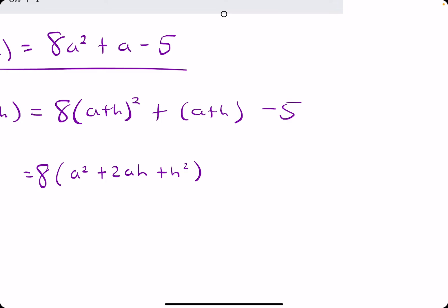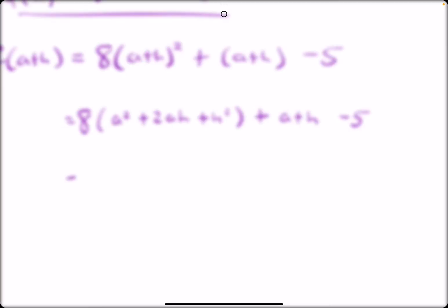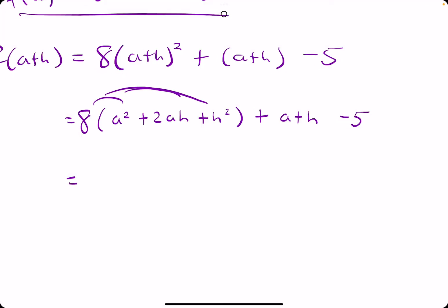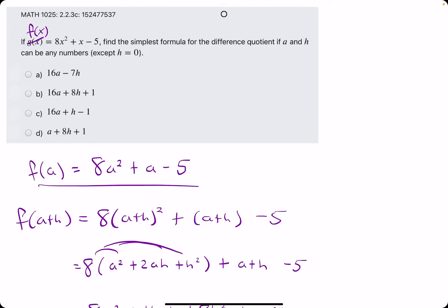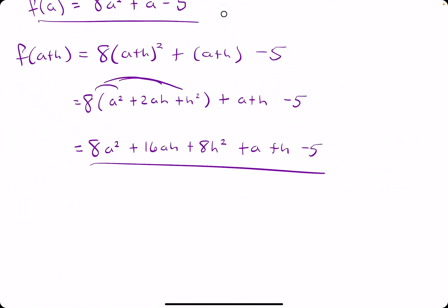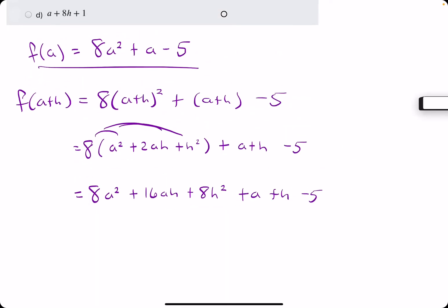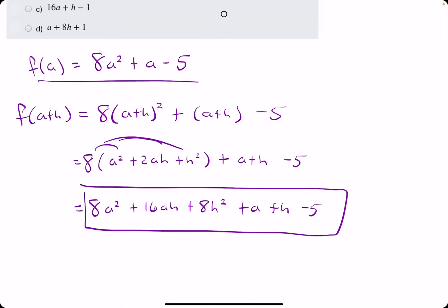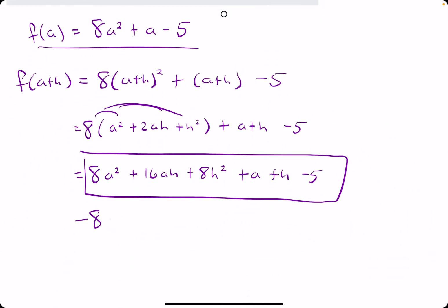So, that's kind of nice, that consistency there. So, plus a plus h minus 5. We want to distribute the eight. 8a² plus 16ah plus 8h² plus a plus h minus 5. All right. So, we have all this for f of a plus h. So, we are going to take f of a plus h. We're going to subtract. You could do this way as well. You could subtract the f of a terms vertically. Because we know that all the f of a terms will actually cancel out.